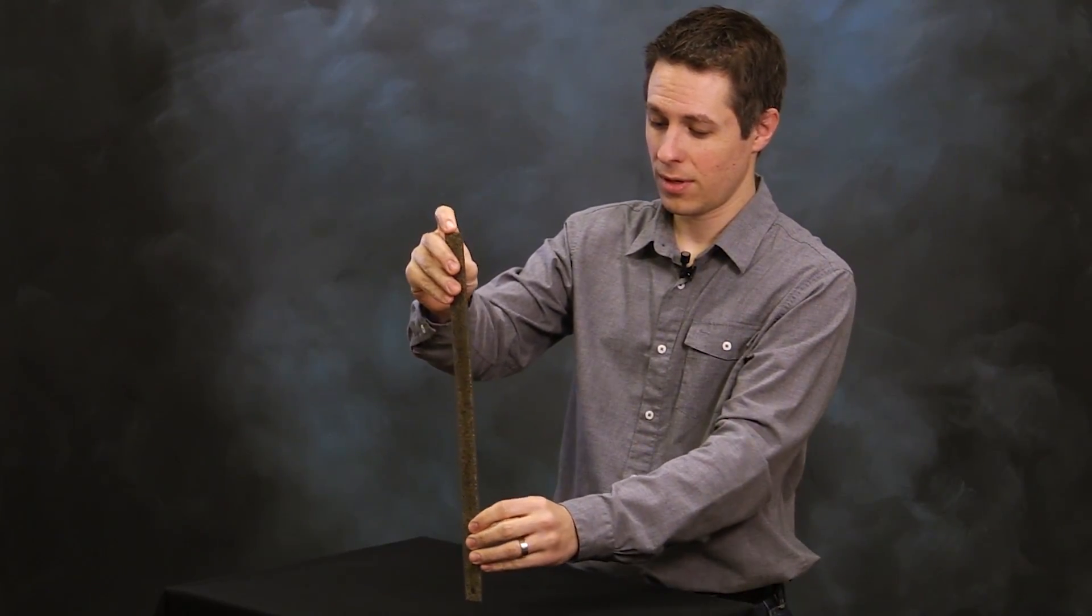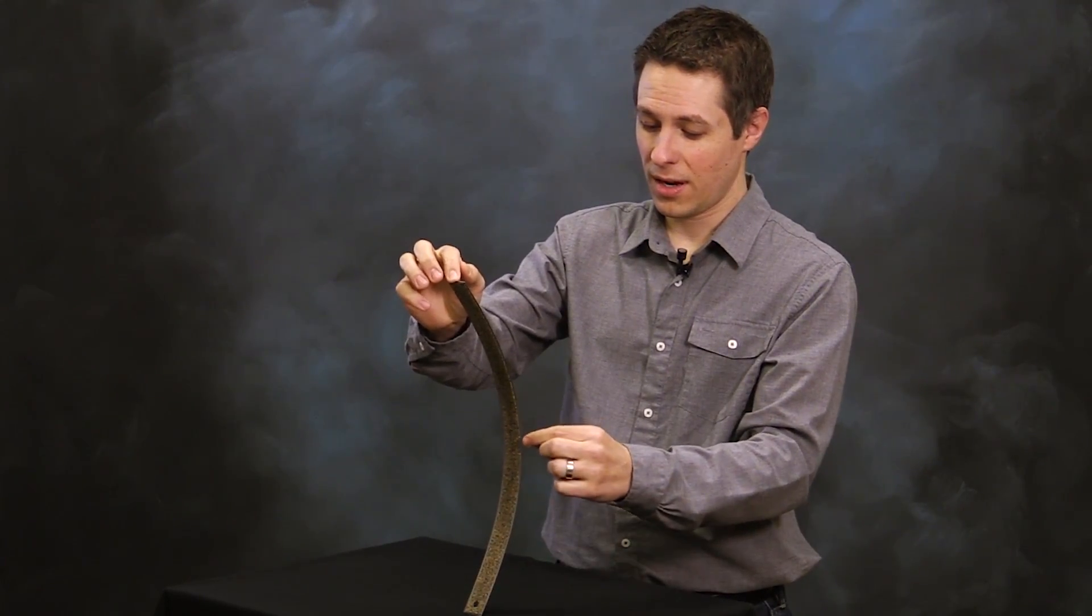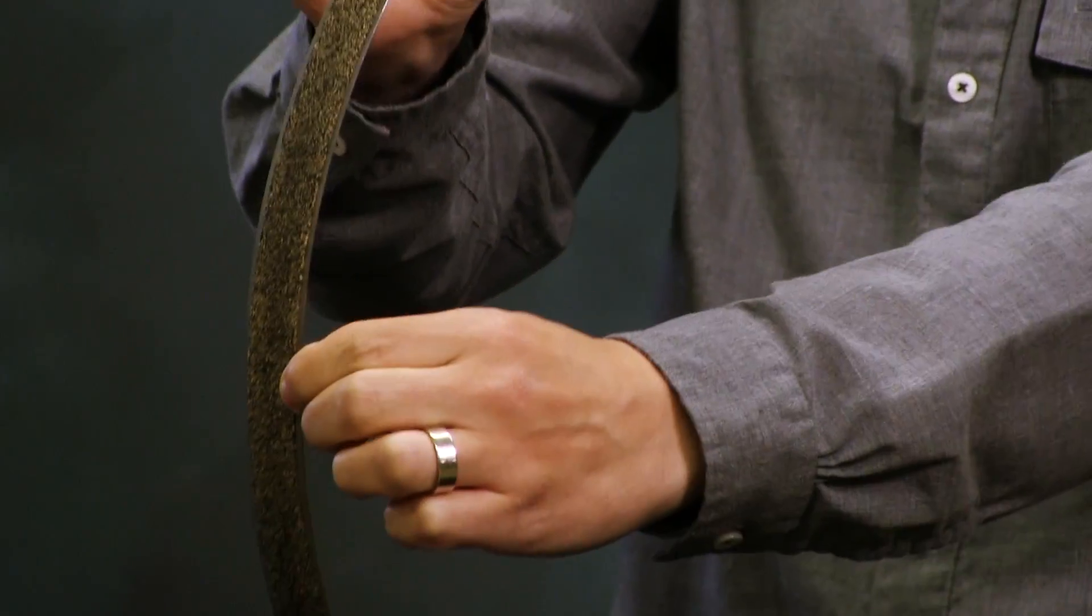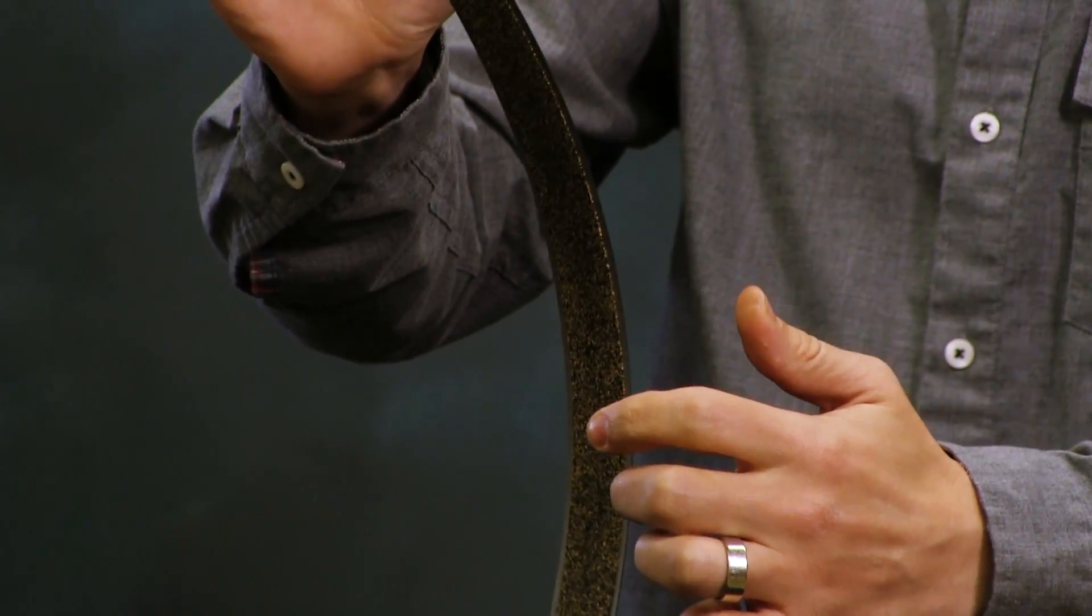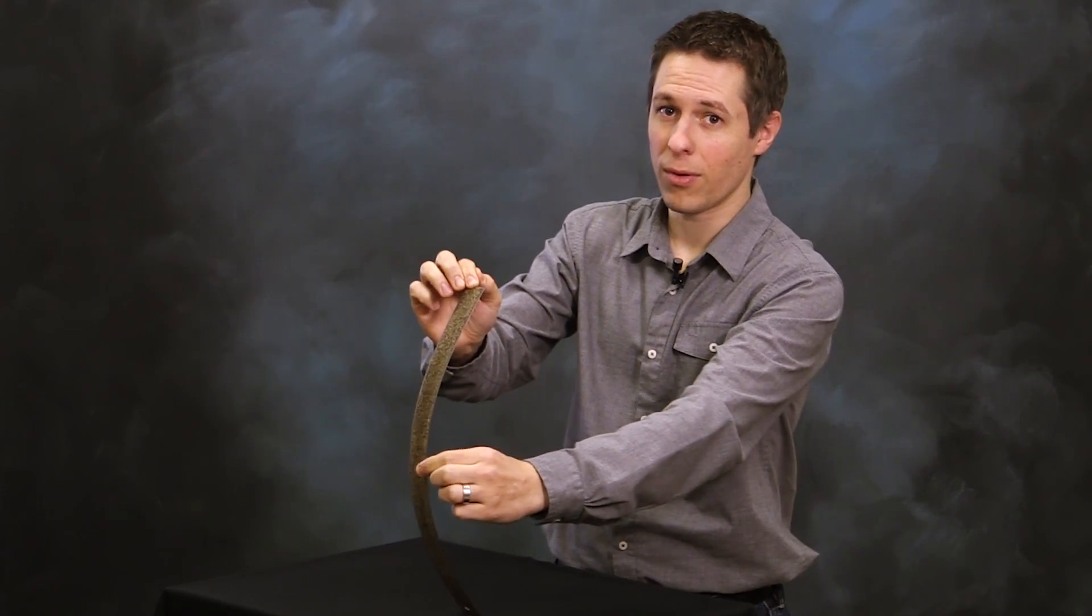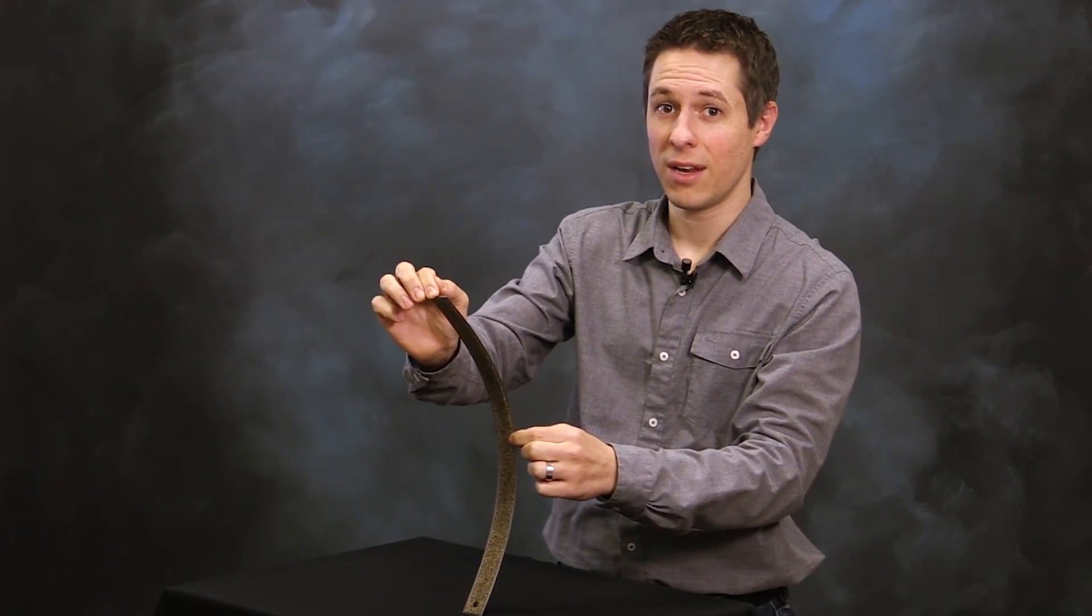Now if I take this ruler, buckle it, and then try to move the center, it no longer resists the load that I'm putting on it. It actually pulls my hand through. We call this instability negative stiffness.